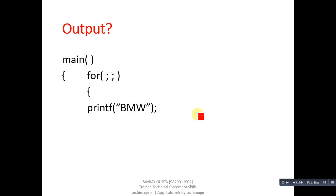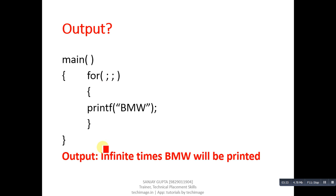The next code segment is related to a loop. In this for loop, two curly braces are written but initialization, termination condition, and increment/decrement parts are missing. This code segment will print BMW infinite times. So the output of this program is BMW printed infinitely.